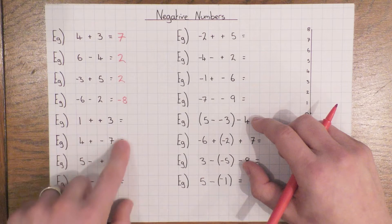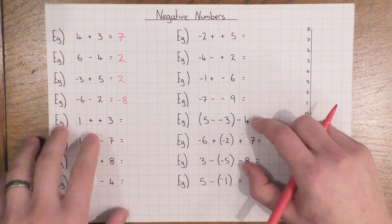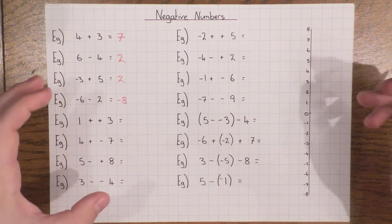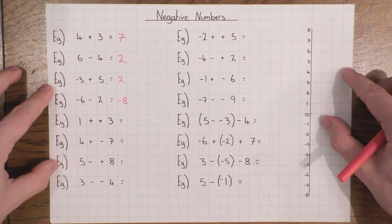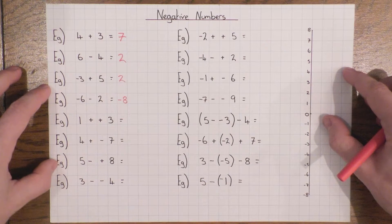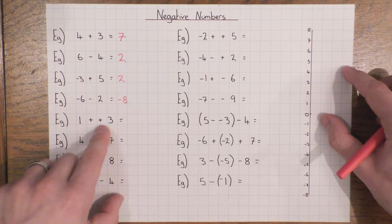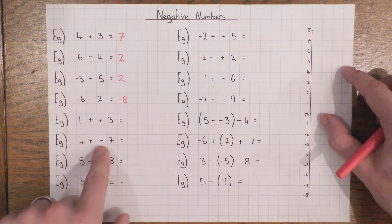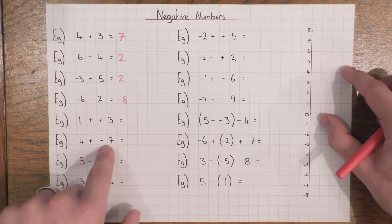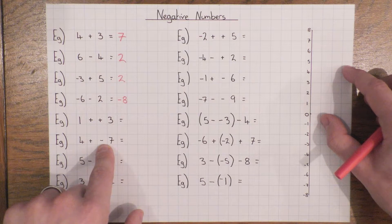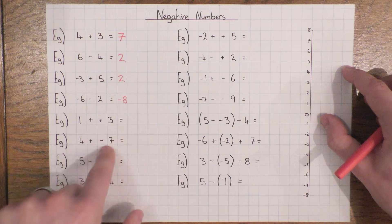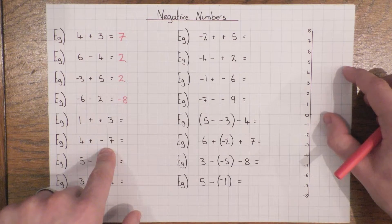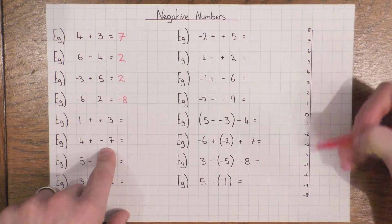How I like to think of this is ice cubes and hot coal — thinking of it as temperature tends to make things easier to understand. A positive number like plus three I imagine as hot coal, and a negative number like minus seven would be ice cubes. If we use that idea where positive numbers are hot coal and negative numbers are ice cubes, you should be able to work out all of these.